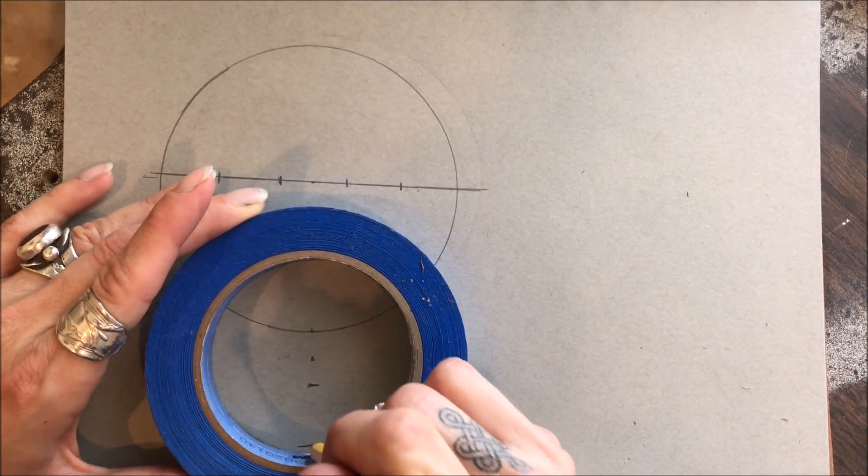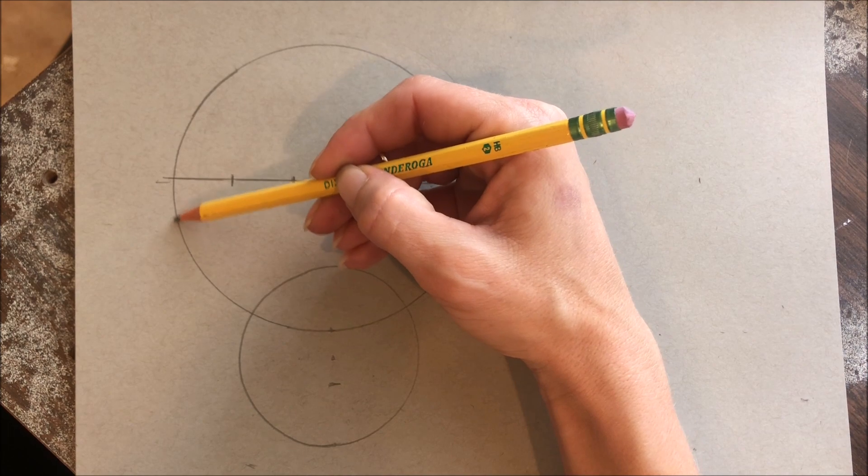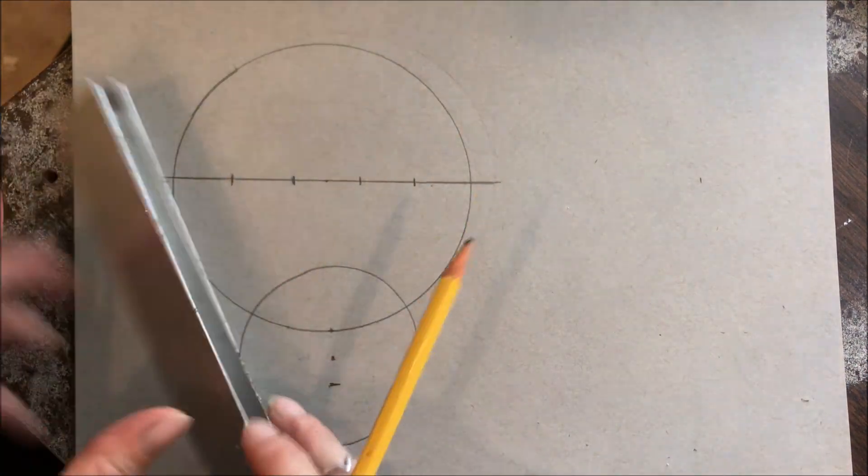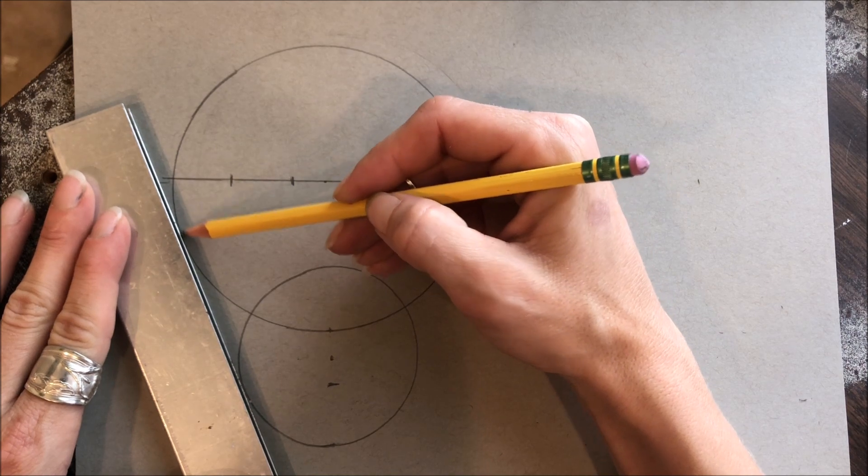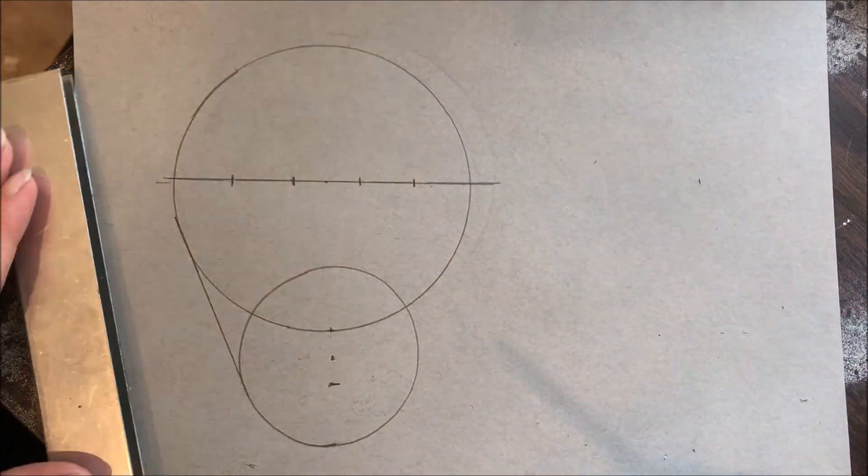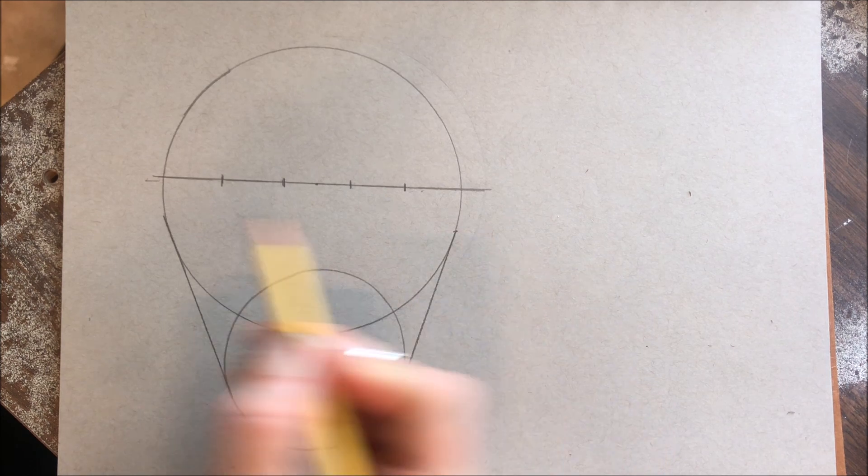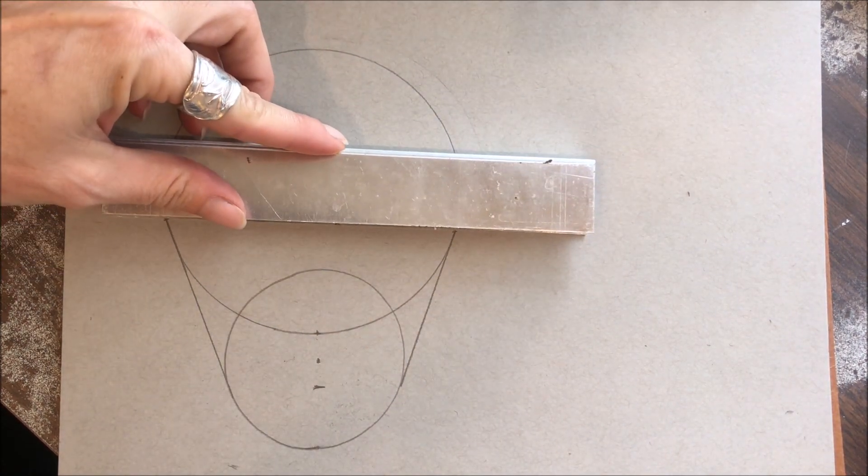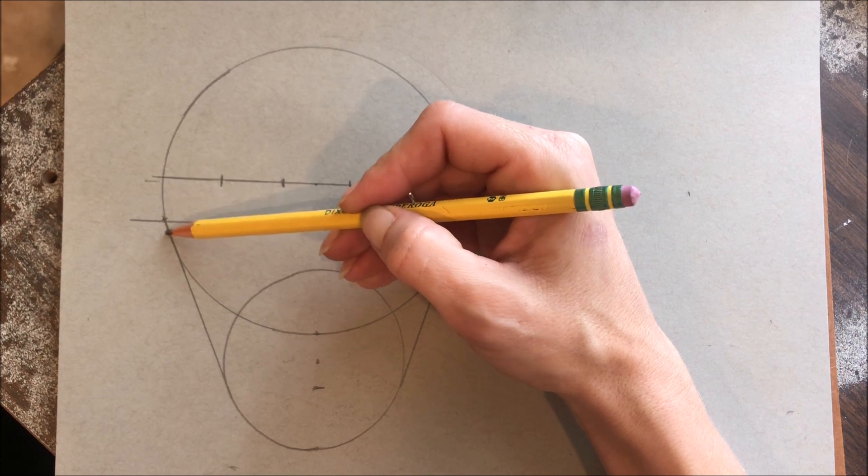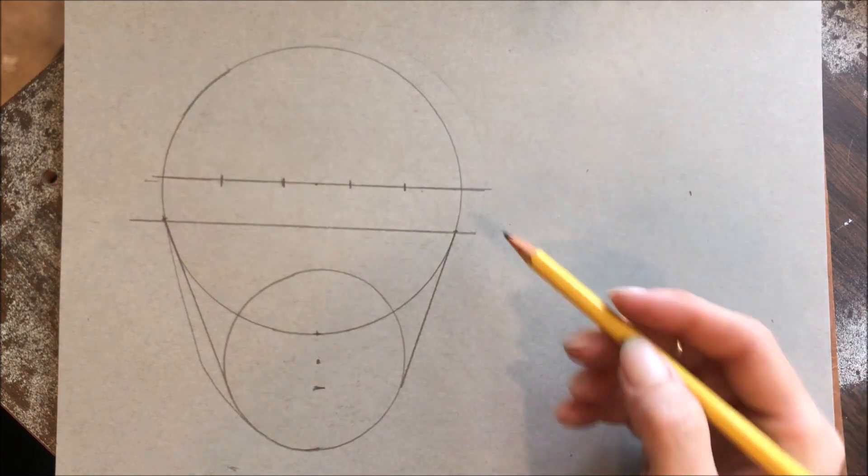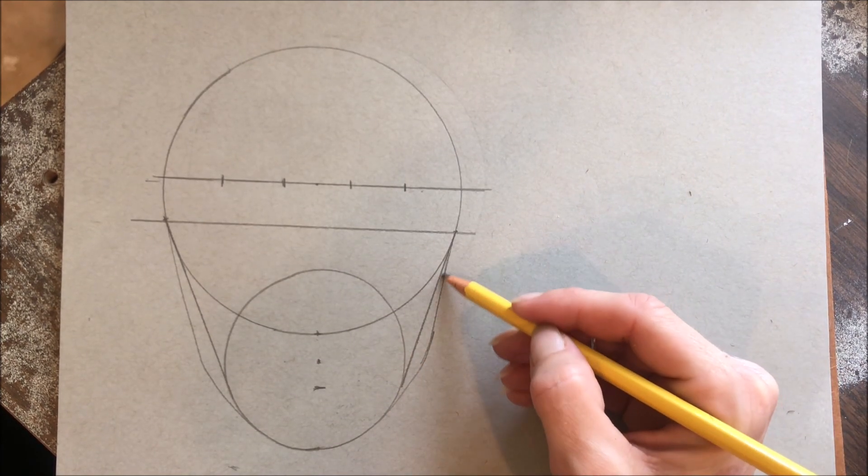Okay, now the halfway mark. So basically, this equals this, this equals this, this equals this. So you want to make sure that these are all equal to each other. Now, you want to find the center point between these two, the bottom of the circle, and this first one. So there's my center point for those two. Now, after finding my center point, I'm going to need another circle. It's going to be much smaller than this big one. I want this to be my center, and this to be the outside of the circle.